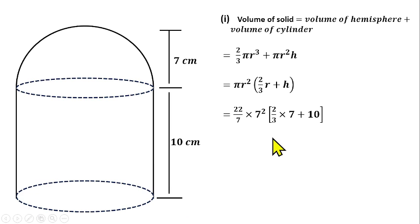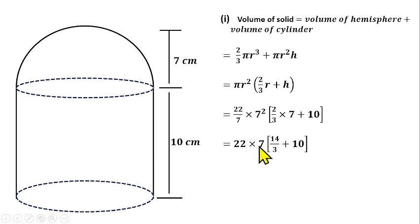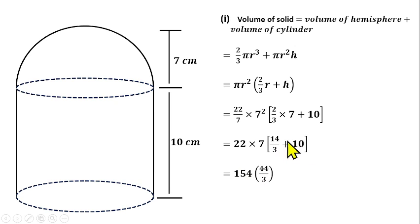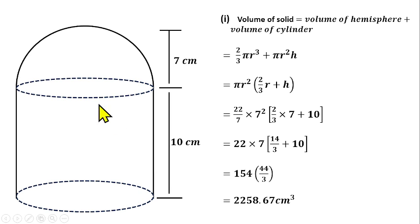Substituting the values: π × 7² × (2/3 × 7 + 10). Seven divided into 22/7 gives 22 × 7 = 154. Inside the brackets: 2 × 7 / 3 = 14/3, plus 10. Finding the LCM gives 44/3 + 10, which simplifies to approximately 2258.67 cubic centimeters as the volume of this solid shape.